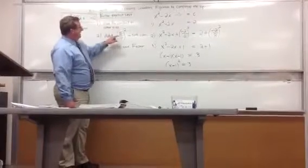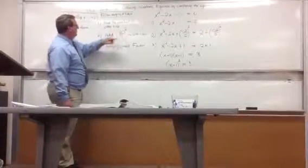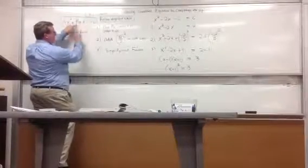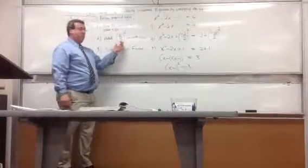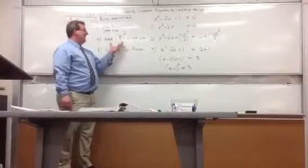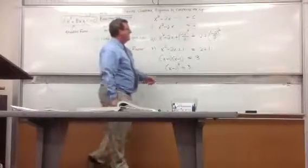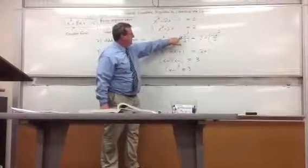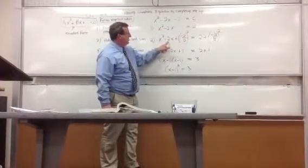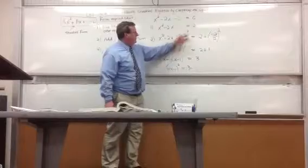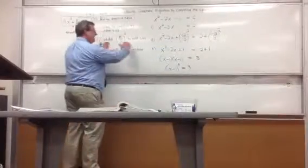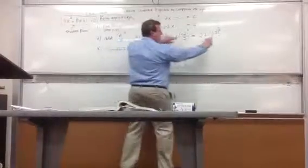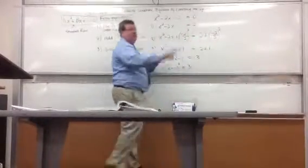Step 2 says add the coefficient of b, the thing that's in front of the x when it's in standard form. Divide it by 2 and then square it. You're adding this quantity to both sides. So what's the number in front of x? That's -2. Divided by 2, square it. That is just a step. We're not asking you to derive it. Just use the steps. You add it to both sides to keep it equivalent.